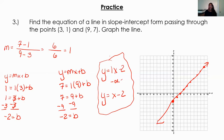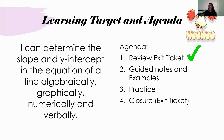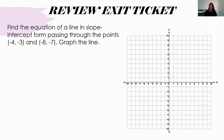So this is how we did it algebraically and graphically. The next video is going to show how we get it numerically and verbally, so this is going to be a two-parter. We already reviewed our exit ticket, looked at the guided notes, and the practice. For today's exit ticket, I want you to find an equation of the line that passes through the points (negative 4, negative 3) and (negative 8, negative 7), and then try to graph it.